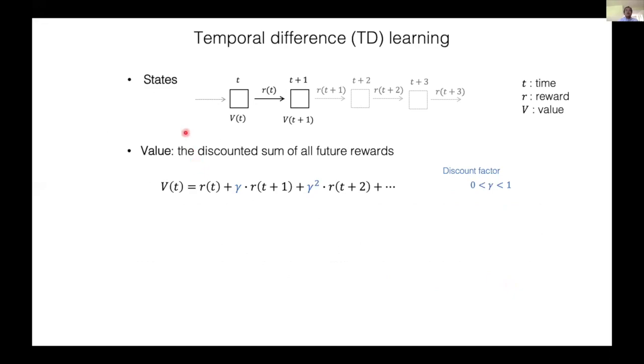As the animal transitions across different states at time t, t plus 1, t plus 2, and so on, it receives reward at these transitions. The state value is the sum of all of these future rewards multiplied by a discounting factor gamma to emphasize the recent reward and discount distant reward. Observing this equation, this part is exactly gamma times V of t plus 1, so this equation can be simplified like the following.